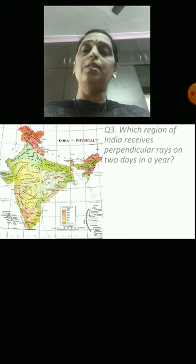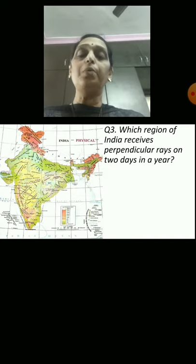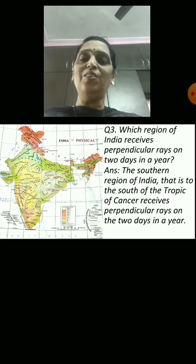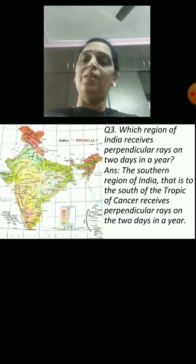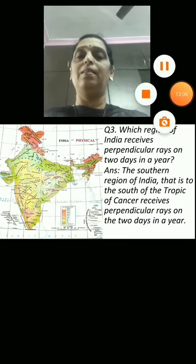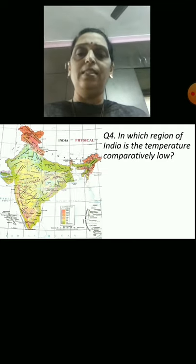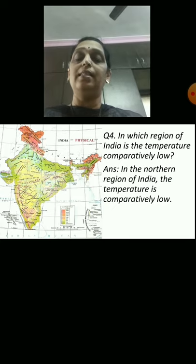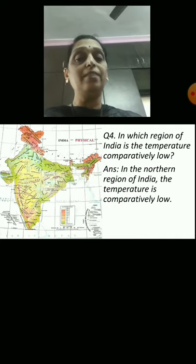Question 3: Which region of India receives perpendicular rays on two days in a year? The answer is the southern region of India, that is to the south of the Tropic of Cancer, receives perpendicular rays on two days in a year. Question 4: In which region of India is the temperature comparatively low? In the northern region of India the temperature is comparatively low because it receives less sun rays.